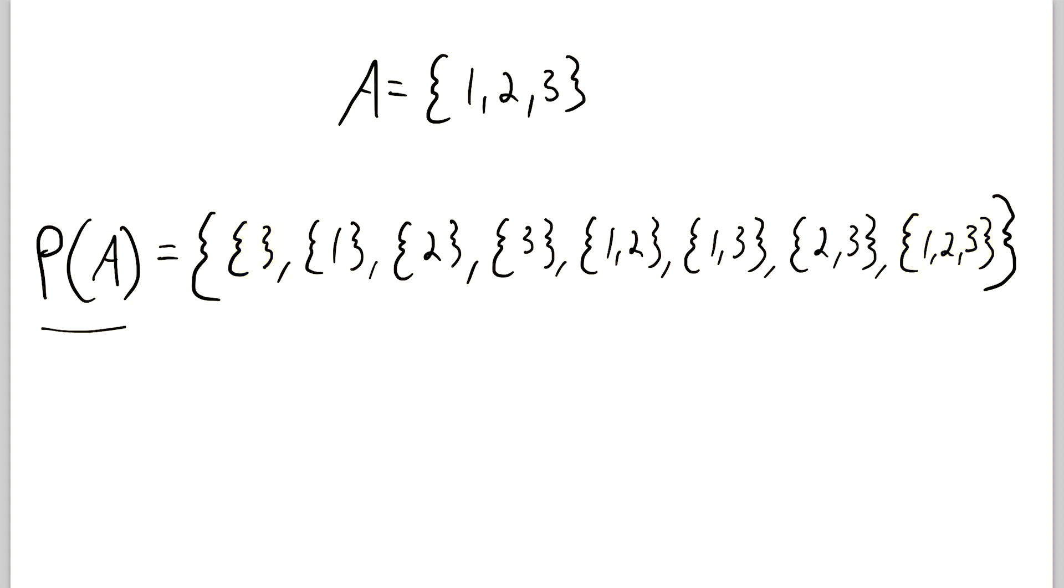So how many elements are in this power set? Let's count them up. We've got 1, 2, 3, 4, 5, 6, 7, 8 elements in the power set of A. Notice that 8 is equal to 2 to the power of 3. And what is 3? Well, it just so happens that 3 is the cardinality of A. The cardinality of A is 3 because A contains 3 elements.